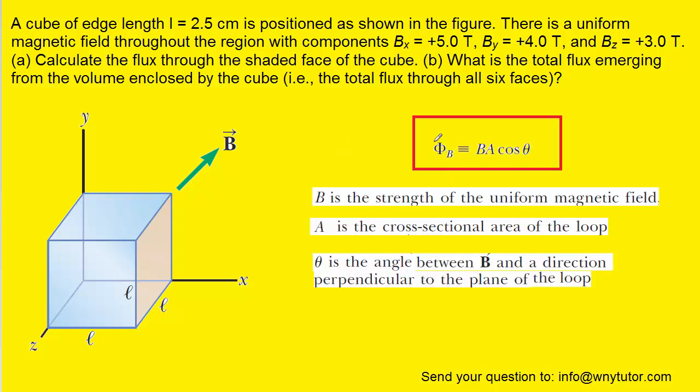Here we have the magnetic flux symbol, and we see that it is equal to the magnetic field times the cross-sectional area of the loop, and then multiplied by the cosine of theta. And we'll see that theta is the angle between the magnetic field and a direction that's perpendicular to the plane of the loop. We'll talk about that in just a moment.